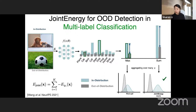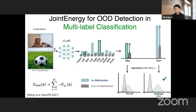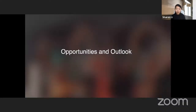A follow-up work extends energy beyond multi-class classification — where images belong to one and only one class — to multi-label classification, where an image could have multiple labels associated. We derive OOD scores suitable for this more general setting, though I won't go into detail here.